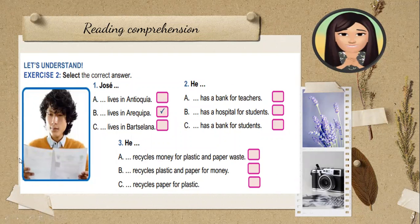Ahora sí, chicos, vamos con nuestros ejercicios de comprensión lectora. Primero vamos a marcar la alternativa correcta para poder completar nuestra frase. For example, number one: Jose lives in Arequipa — is letter B. Colocamos un check y completamos la frase.